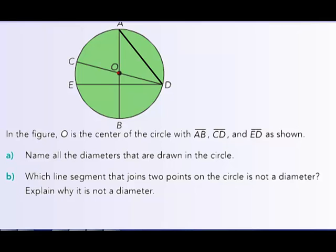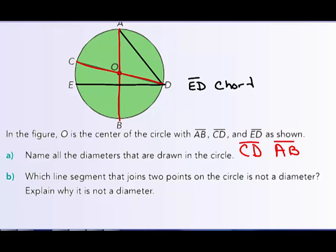Name all the diameters drawn in this circle. Remember, a diameter has to go through the center. CD does go through the center, so segment CD is a diameter. AB also goes through center O, so AB is also a diameter. However, ED is not — ED is a chord. A radius is OA — from O, the center, out to the edge. We also have OD and OC as radii.